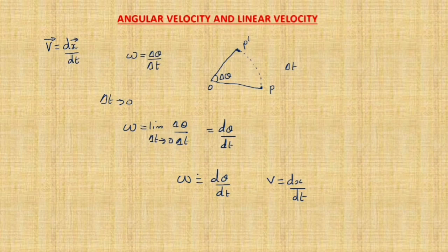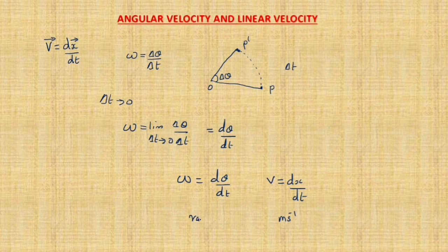This is talking about angular velocity and linear velocity. The SI unit of linear velocity is meter per second, whereas the unit of angular velocity is radian per second.